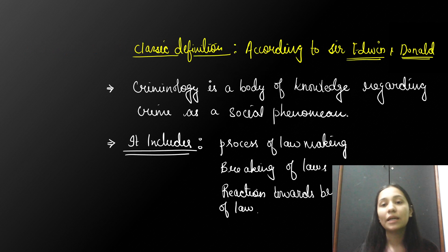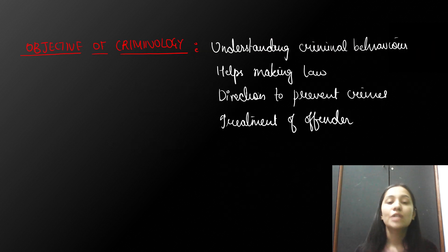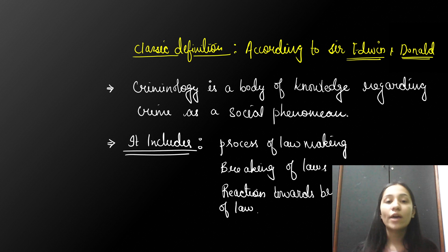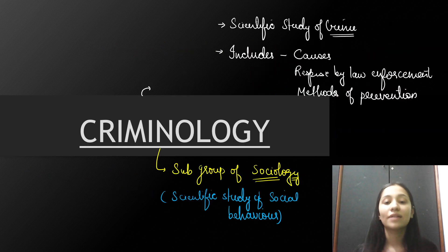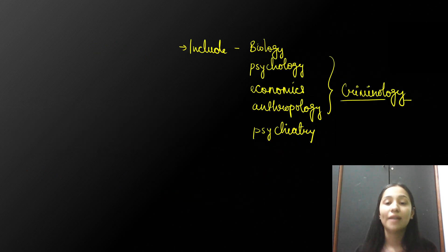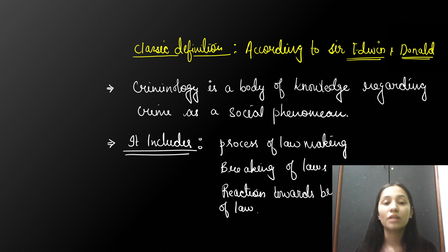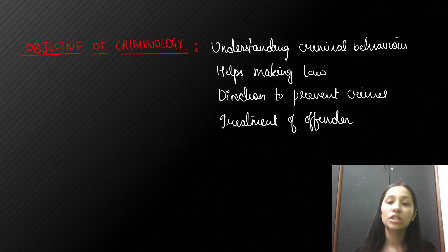In the next class, we will start the history and see the nature of criminology. Small videos will be made on a few topics from SOCO. For a full course, stay tuned for the official video on our app. I hope you understand what criminology is, what it includes, what sociology is, its definition, and that it includes biology, psychology, psychiatry, economics, anthropology, and statistics. Criminology's basic definition originates from Latin and Greek words, and we have seen in brief the objective of criminology.